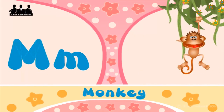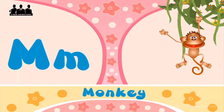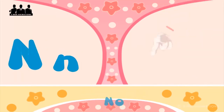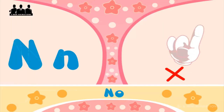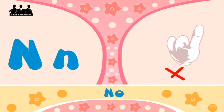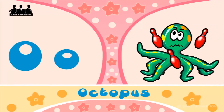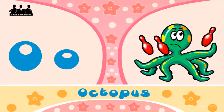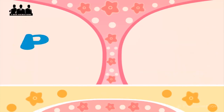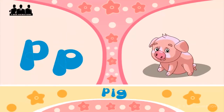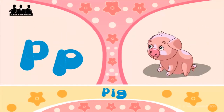M is for monkey, m-m-monkey. N is for no, n-n-no. O is for octopus, o-o-octopus. P is for pig, p-p-pig.